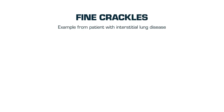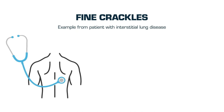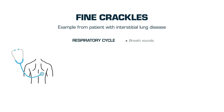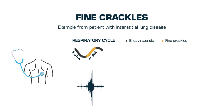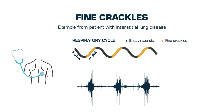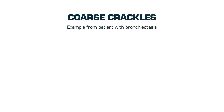We will now listen to an example of a fine crackle from a patient with interstitial lung disease. In this example, the patient is auscultated at the base of the right lung. Next, we will listen to a coarse crackle from a patient with bronchiectasis, auscultated at the base of the lungs.